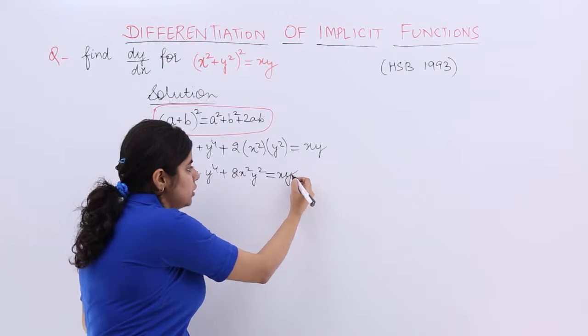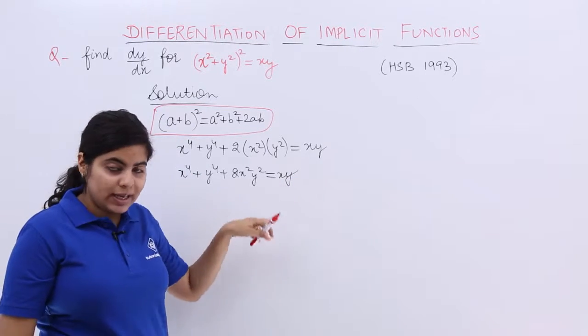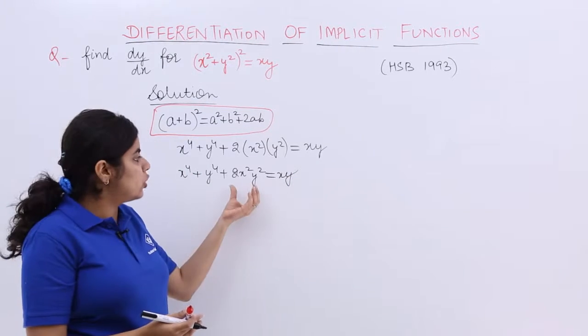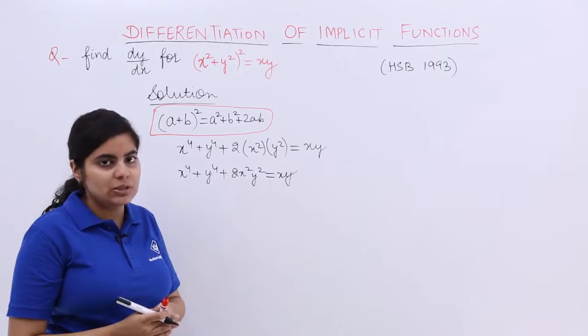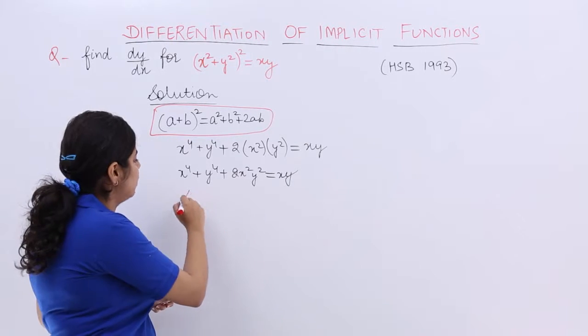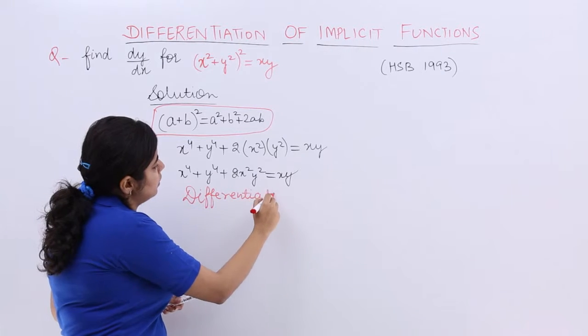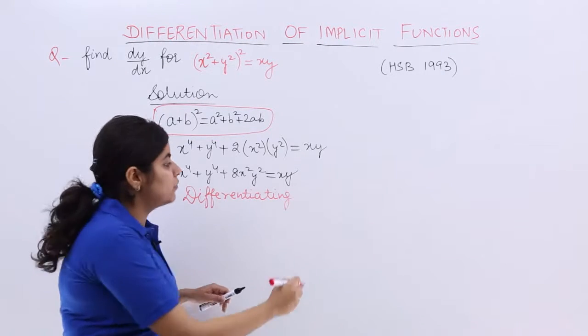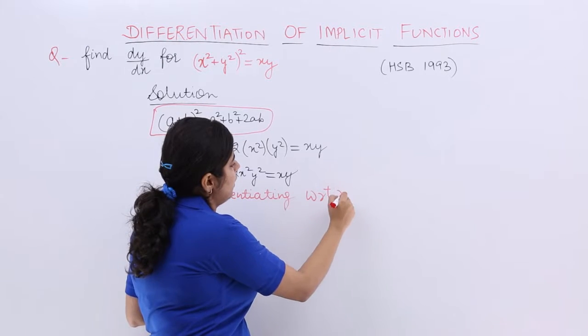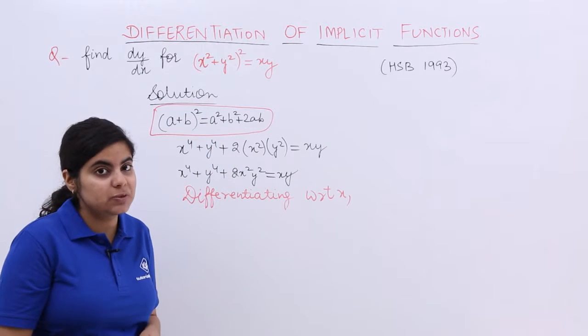Now what we have to do? Now see, can you again separate some things? No. Because here also x and y are in the product. Here also. So basically let me directly write down. Differentiating with respect to x.